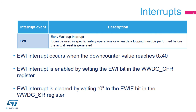The early wake-up interrupt can be used to perform emergency tasks before the reset occurs, such as data logging, data protection, watchdog refresh to prevent the reset, or other emergency tasks. The EWI interrupt occurs whenever the down counter value reaches 0x40. It is enabled by setting the EWI bit in the WWDG_CFR register. The EWI interrupt is cleared by writing 0 to the EWIF bit in the WWDG_SR register.